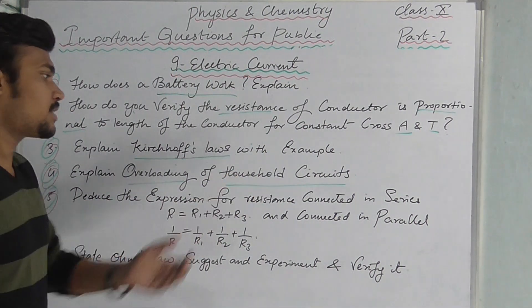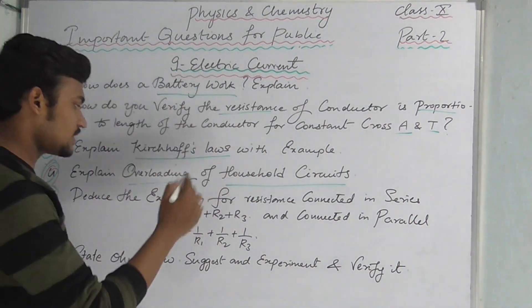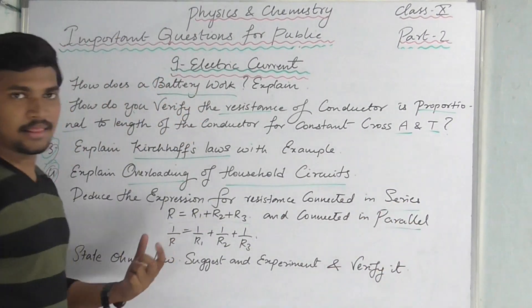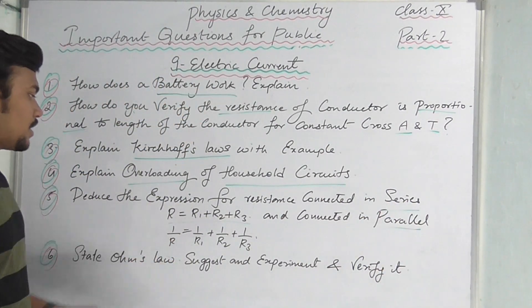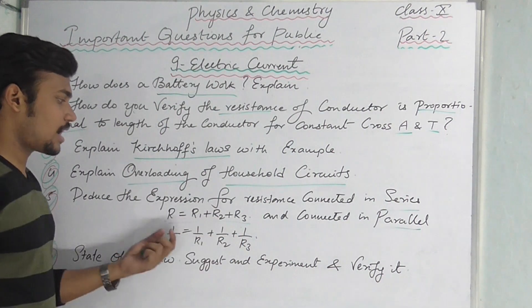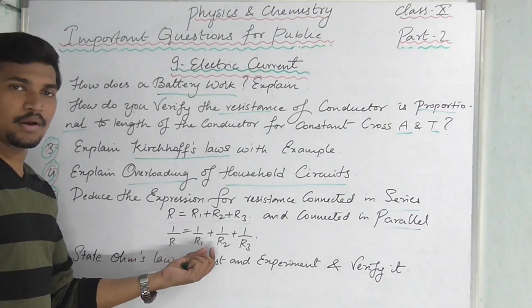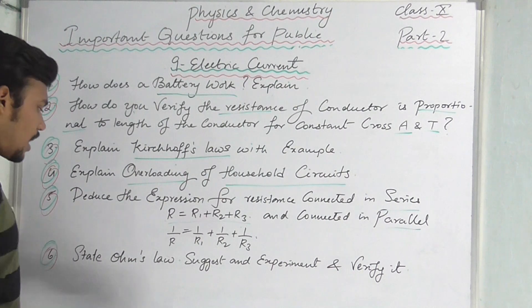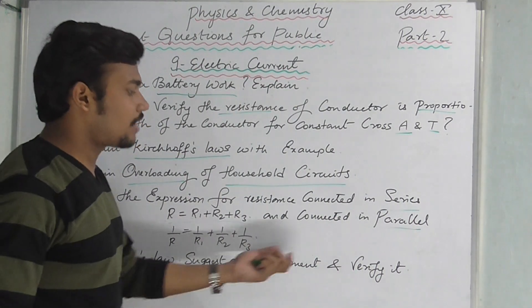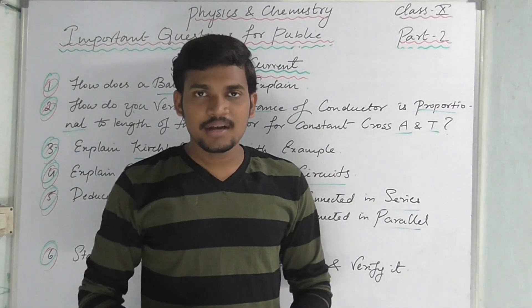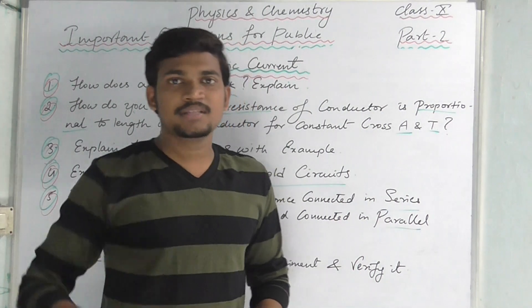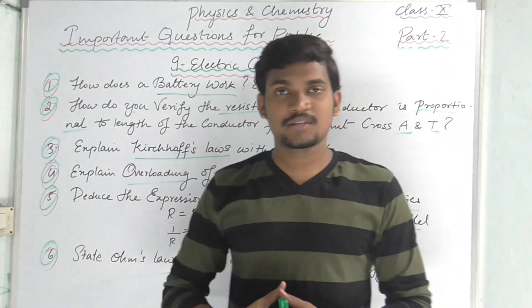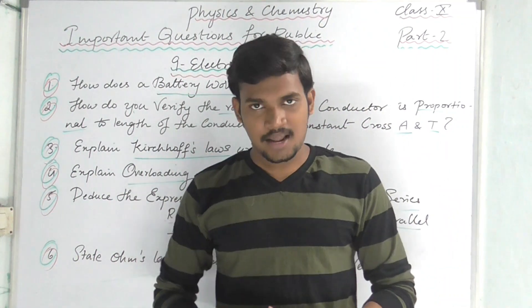Derive the expressions for resistance in series and parallel: R = R1 + R2 + R3, and 1/R = 1/R1 + 1/R2 + 1/R3. State Ohm's Law — you also have to give an example and verify the process. These are the important questions from the chapter Electric Current.